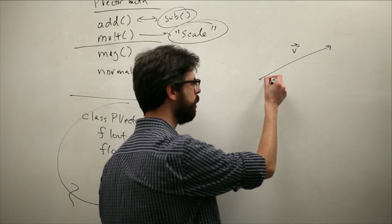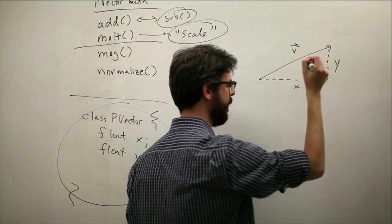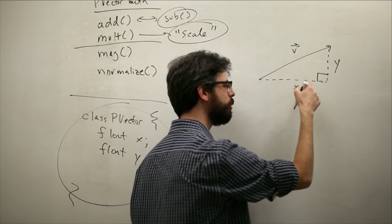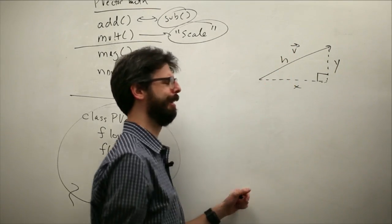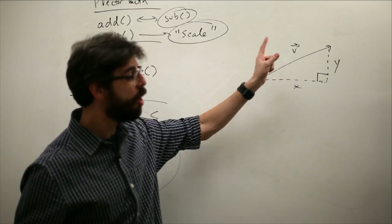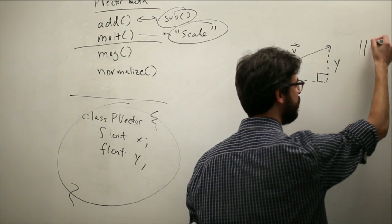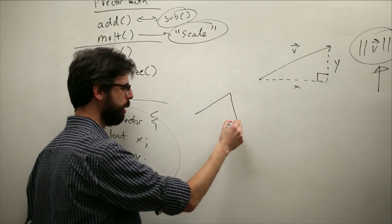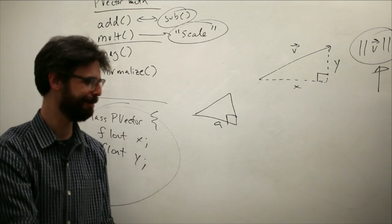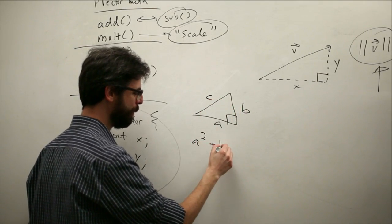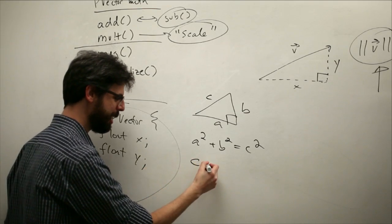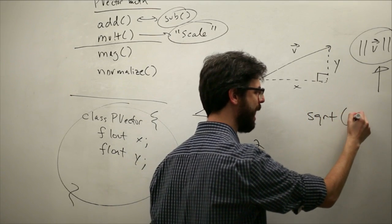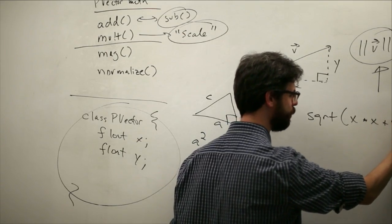So how does that work? The components are an x and a y. Out of this vector we made a right triangle. The components are an x and a y. Would the hypotenuse of that triangle be the magnitude of the vector? We often write, notation-wise, the magnitude of a vector like this. The Pythagorean theorem — a squared plus b squared equals c squared — solve for c: c equals the square root of a squared plus b squared. The magnitude of this vector is the square root of x times x plus y times y.